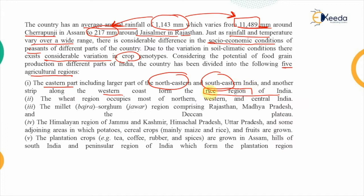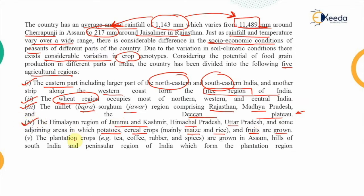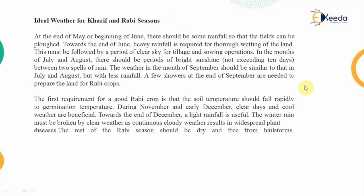The second region is the wheat region of India. The third is the bajra and jowar region, composing the area of Rajasthan, Madhya Pradesh, and the Deccan plateau including Gujarat and Maharashtra. The fourth is the Himalayan region of Jammu & Kashmir, Himachal Pradesh, Uttar Pradesh, and Uttarakhand, where potatoes, cereals mainly maize and rice, and fruits are grown. The fifth is the plantation crops region — tea, coffee, rubber, and spices — grown in Assam and the hills of South and Peninsular India.